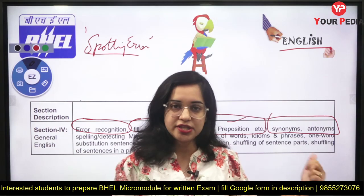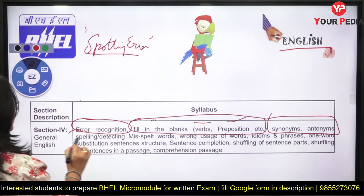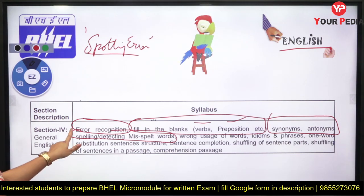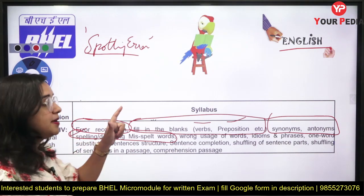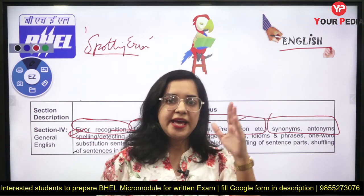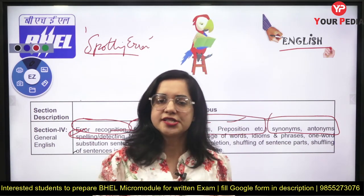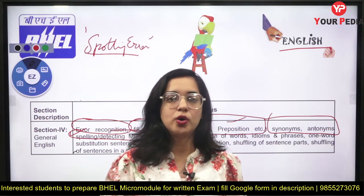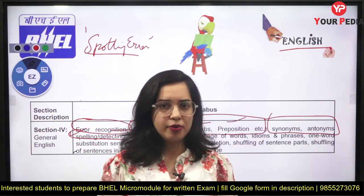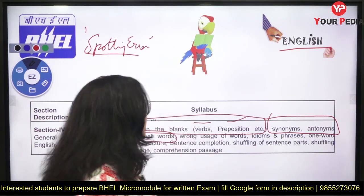Next is spelling — detecting misspelled words. There are two types of questions on spellings: either four different spellings of the same word are given and you choose the correct one, or four different words are given and you have to choose the correctly spelled one.